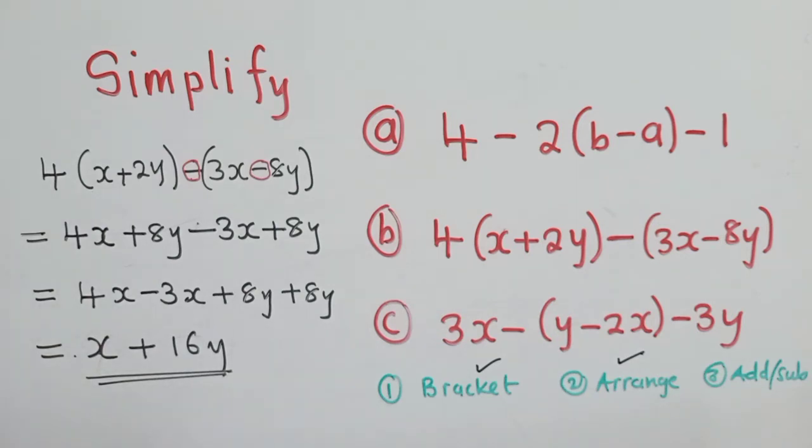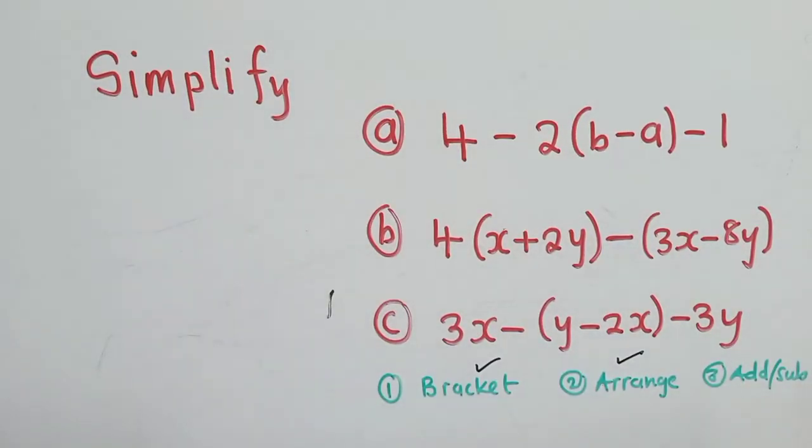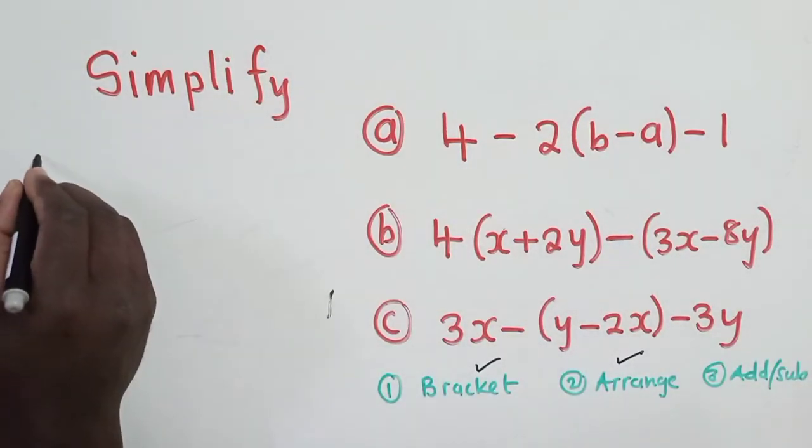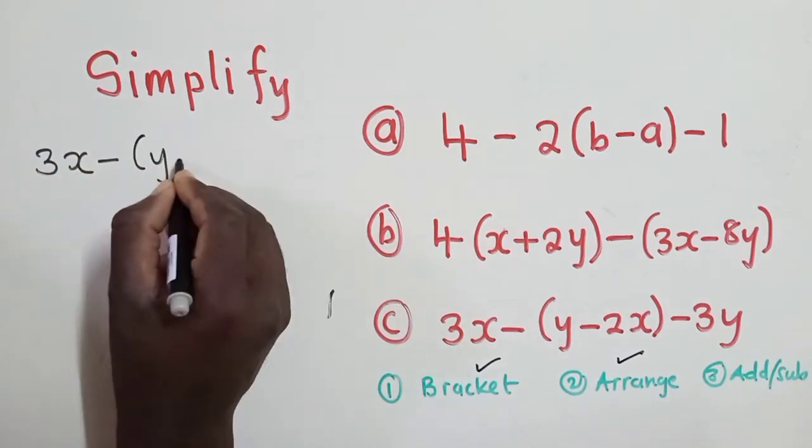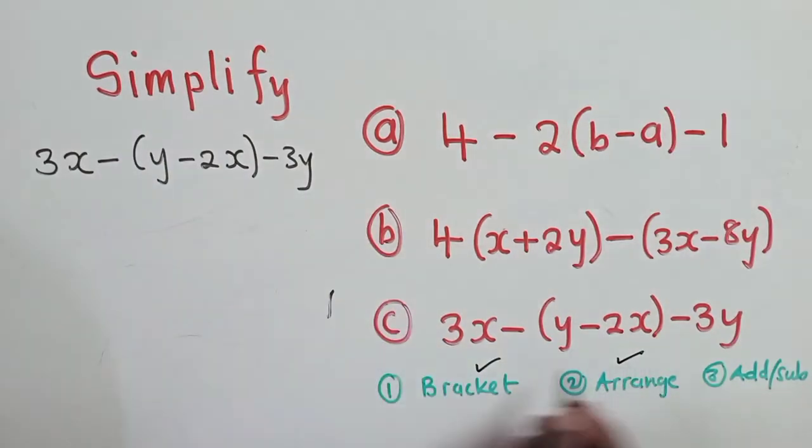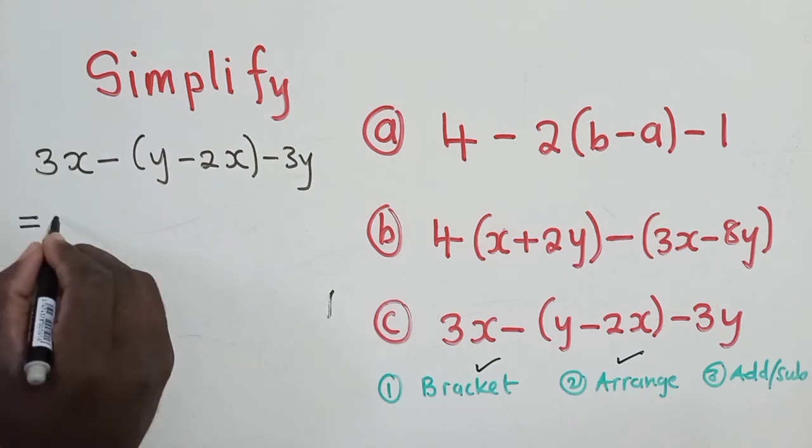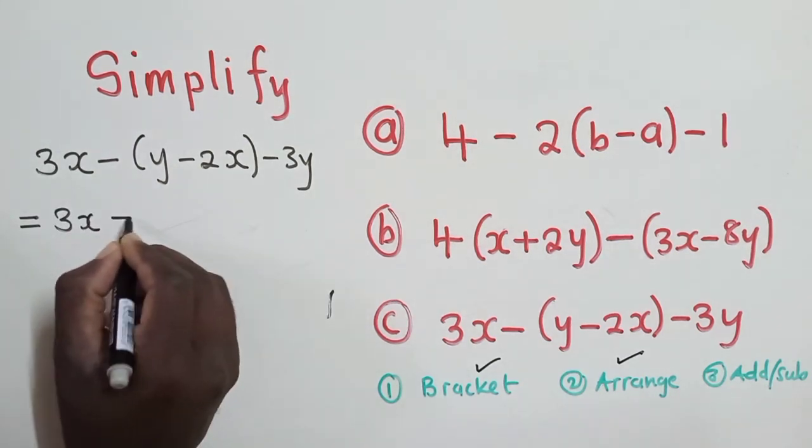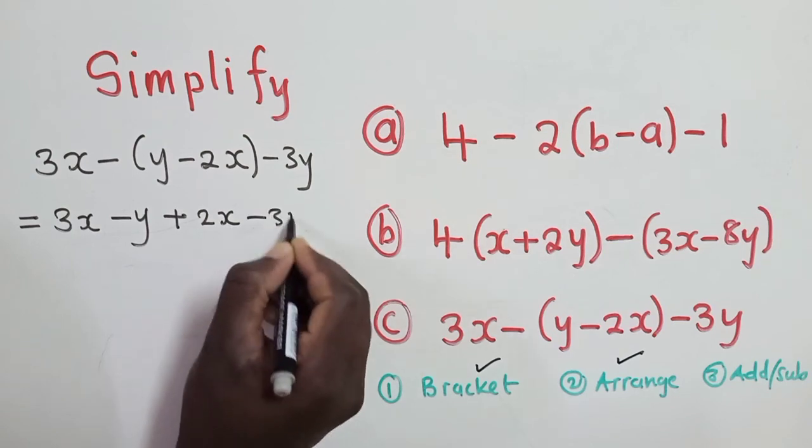We go to the last question. The last question. 3x minus (y minus 2x) minus 3y. So this is question C. Rule number 1, get rid of the brackets. So equal to 3x minus y plus 2x minus 3y.